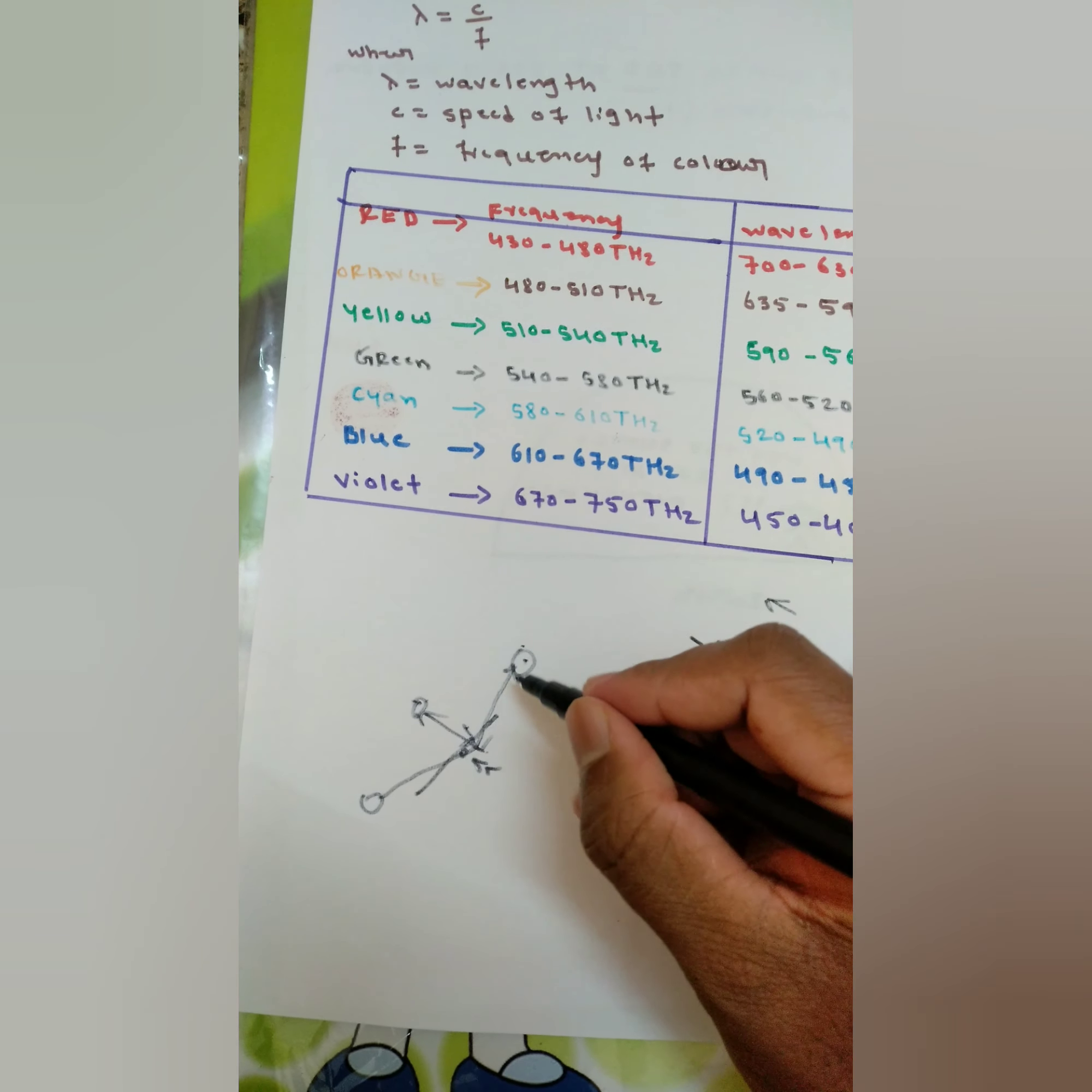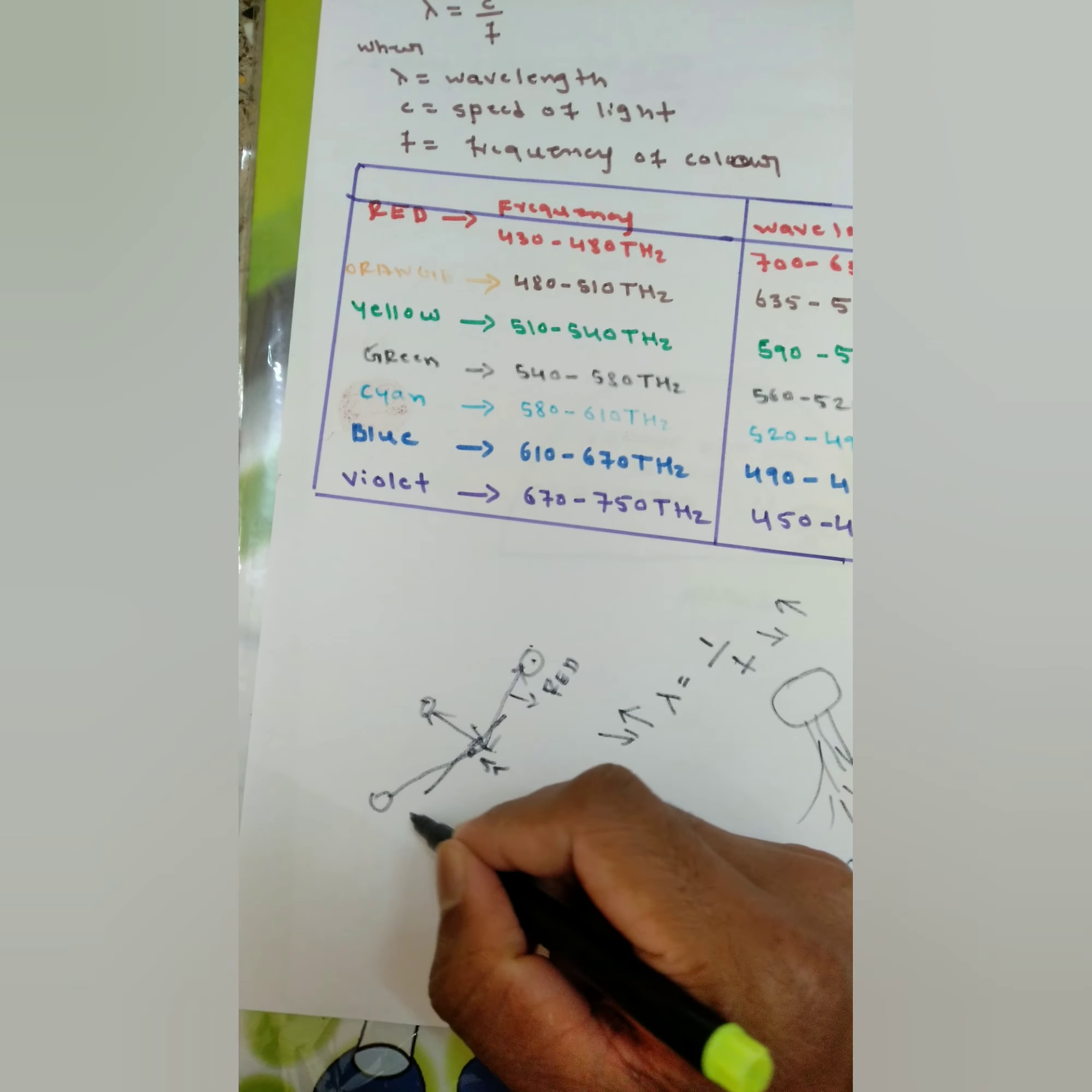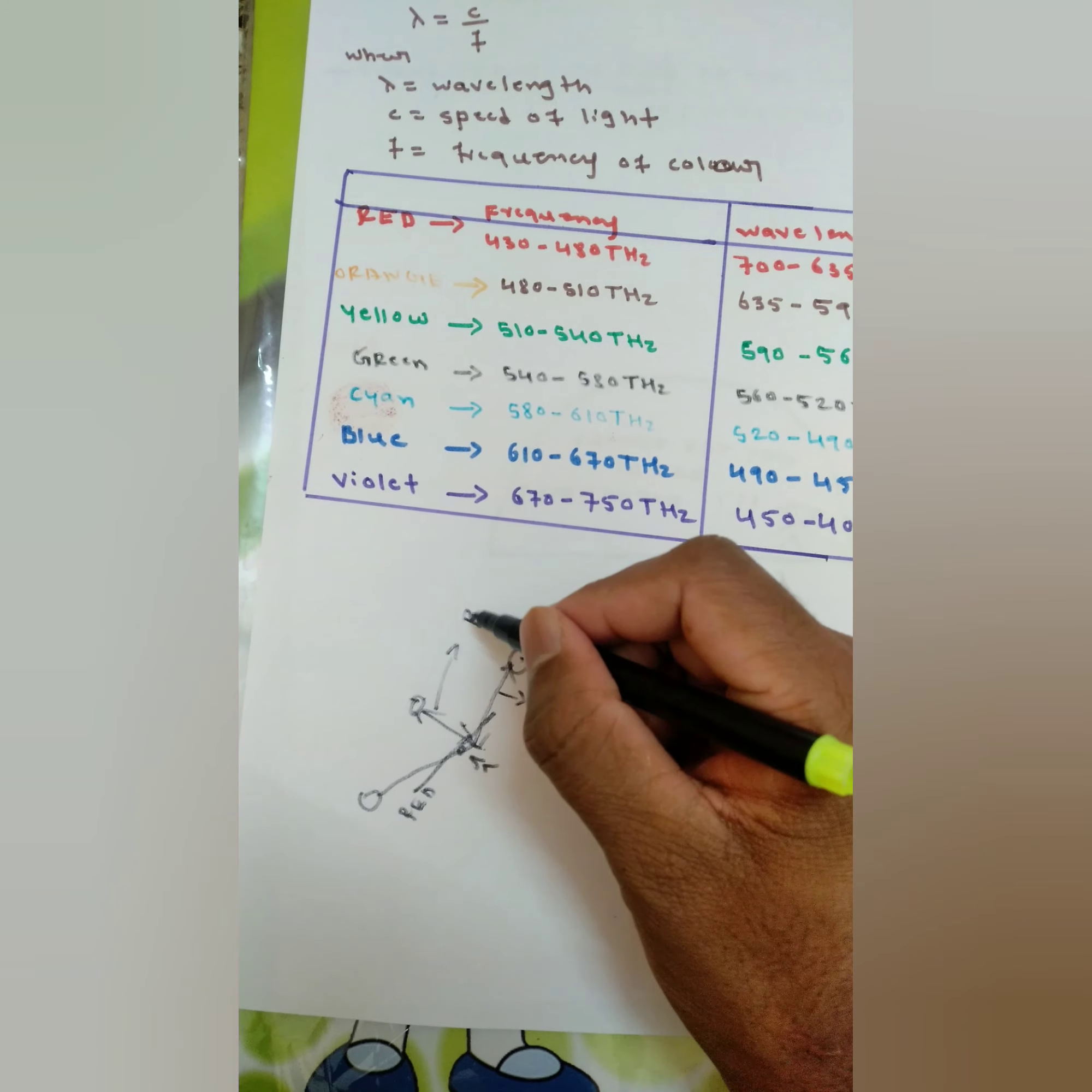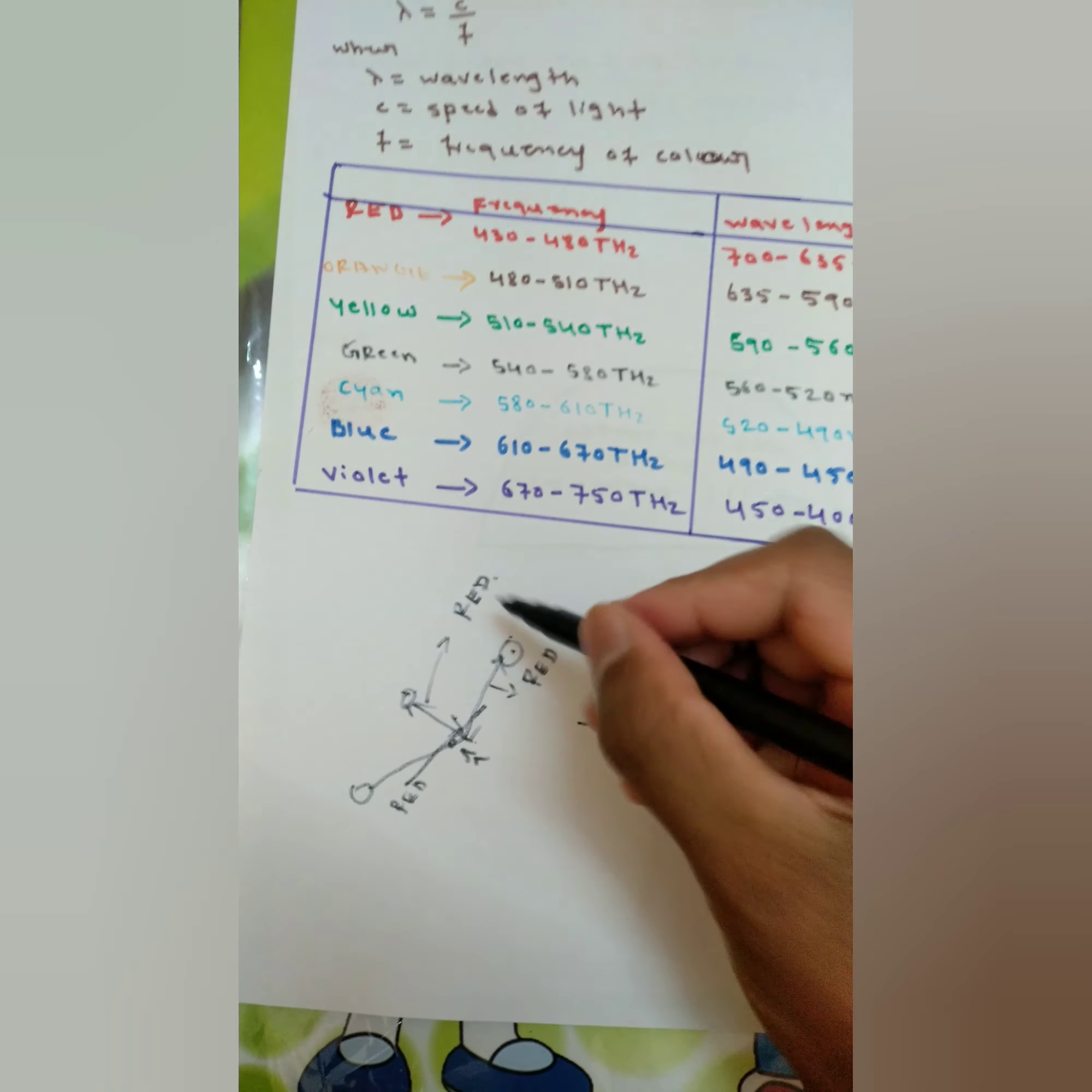That's why the sun looks red at morning and evening. At noon it will look like some combination of colors, almost red but with slight changes. At morning and evening it will look purely red.